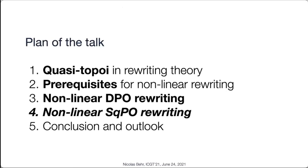What I will show in this talk — a run-through of a quite dense paper — is that quasi-topoi are a surprisingly natural setting to do this generalized non-linear rewriting theory, in both double push-out and sesqui push-out rewriting. There are certain prerequisites to even formulate the semantics of either type of rewriting, which will be developed, and then I'll show the non-linear DPO and non-linear sesqui push-out rewriting with some conclusions and outlook.